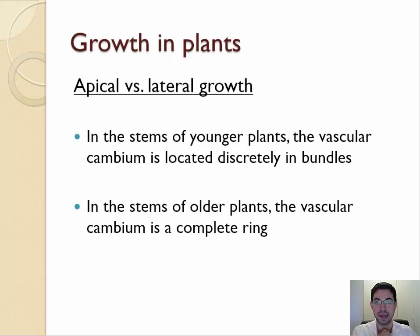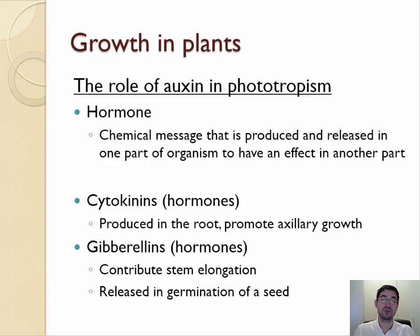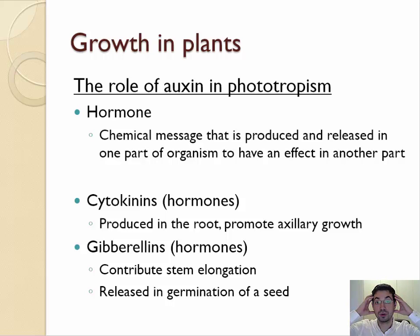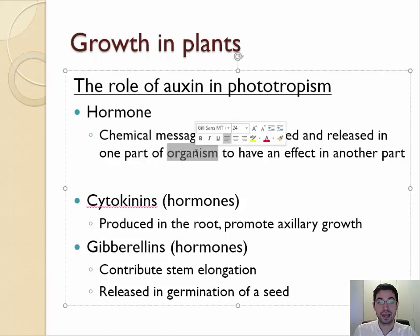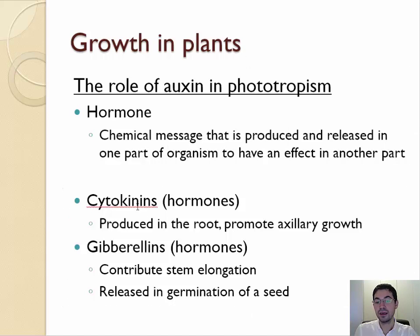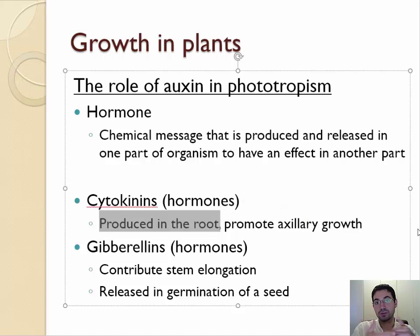Let's talk about how plants grow. Plant hormones control the growth of the shoot apex. A hormone is any chemical message produced in one part of the living thing that affects another part. During puberty, hormones are released by parts of the brain like the pituitary, or by the gonads — testes and ovaries — and cause growth and development in other parts of the body. Plants also have hormones released in one part to have an effect in another part. One example is cytokinins, which are produced in the root and produce growth of the axis or tip of the root — you don't need to memorize this example.